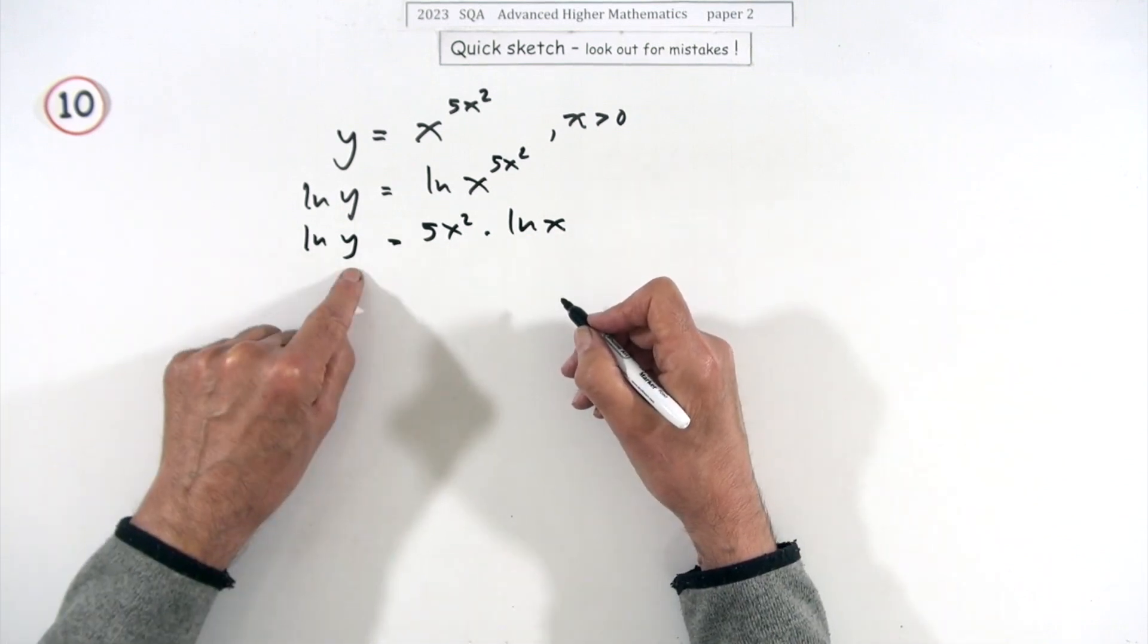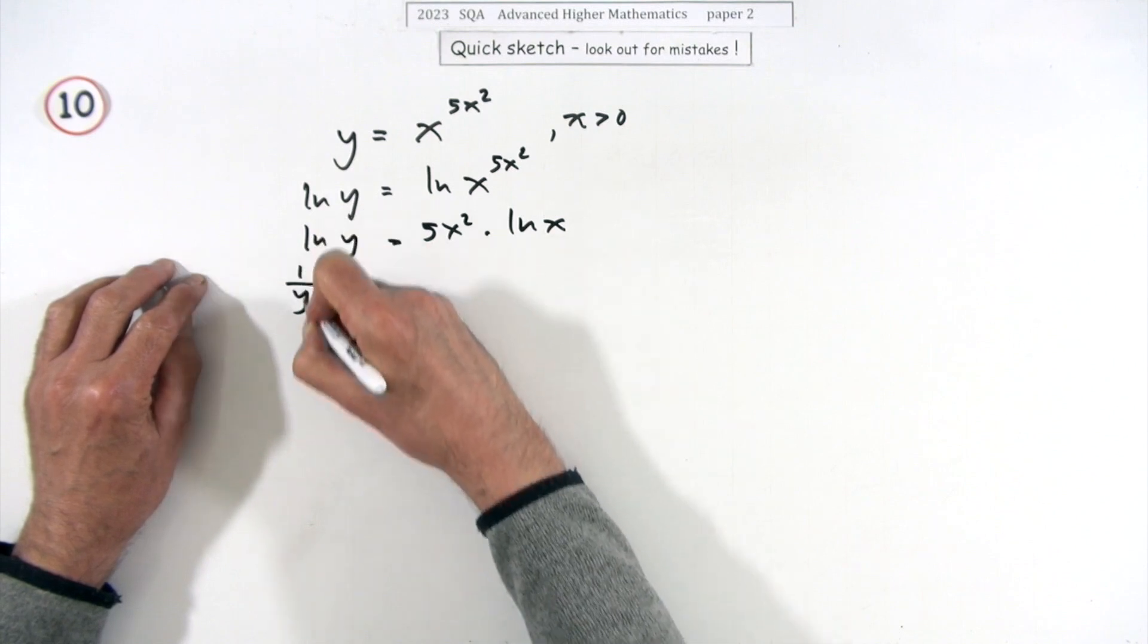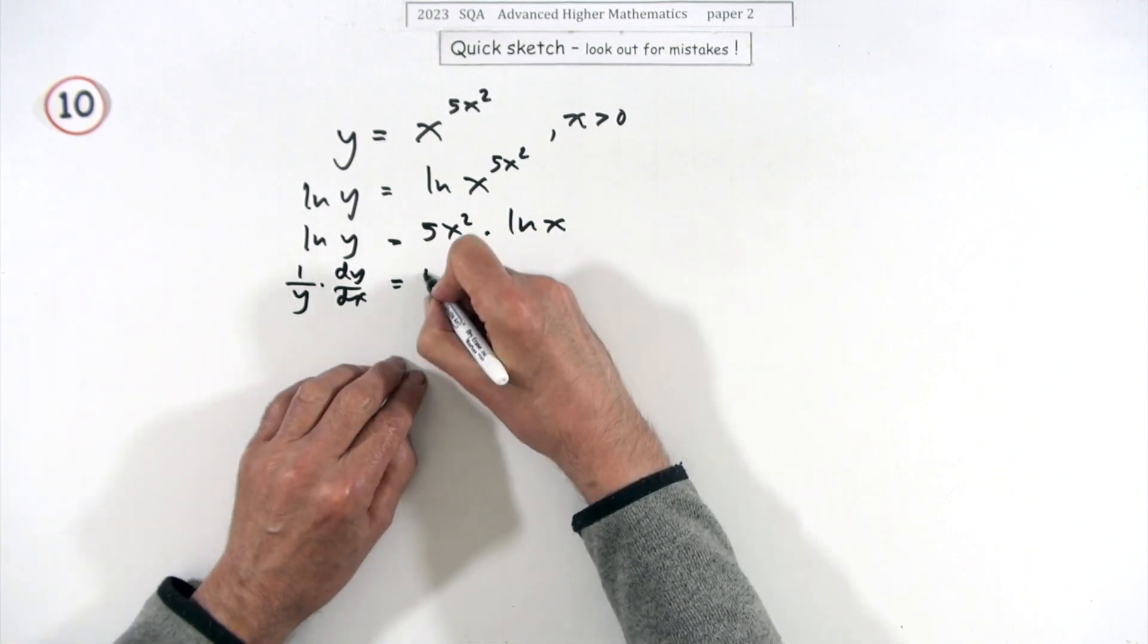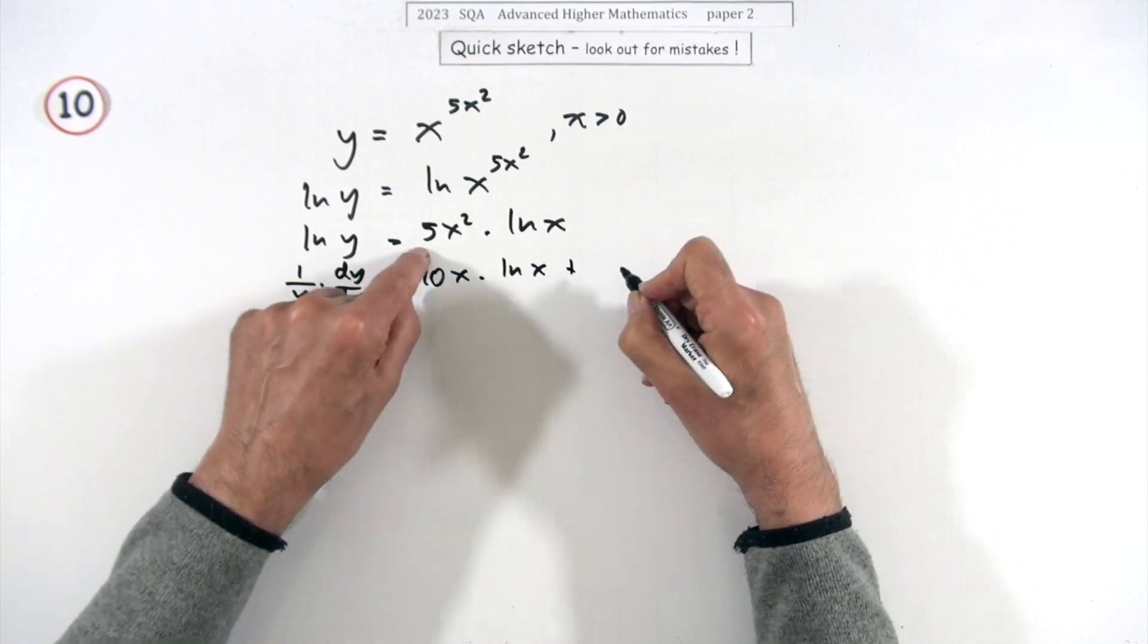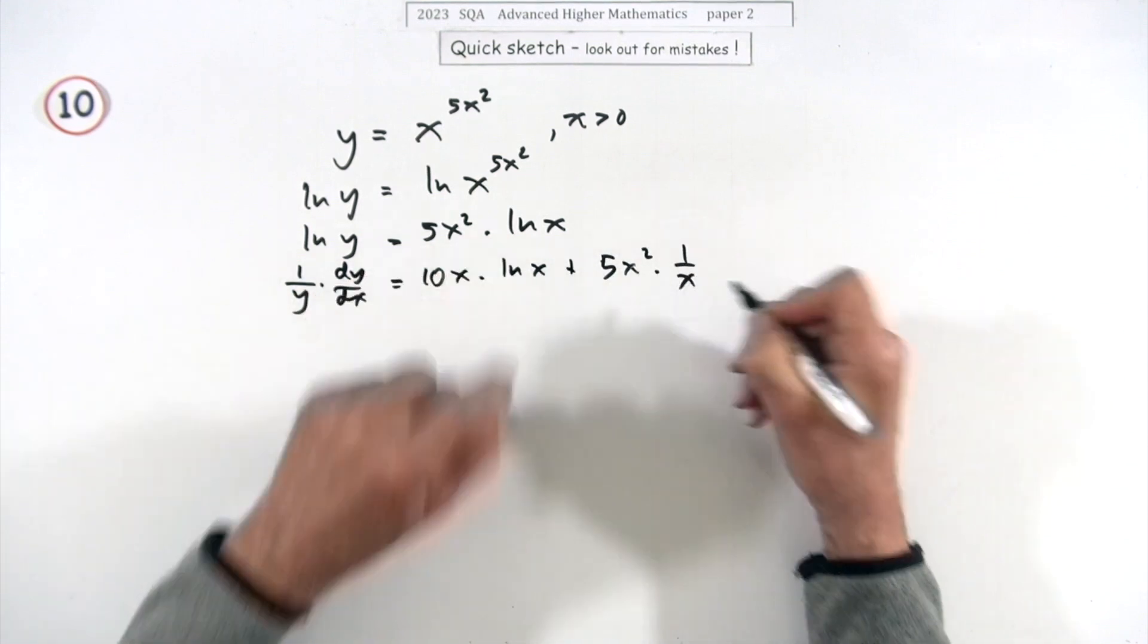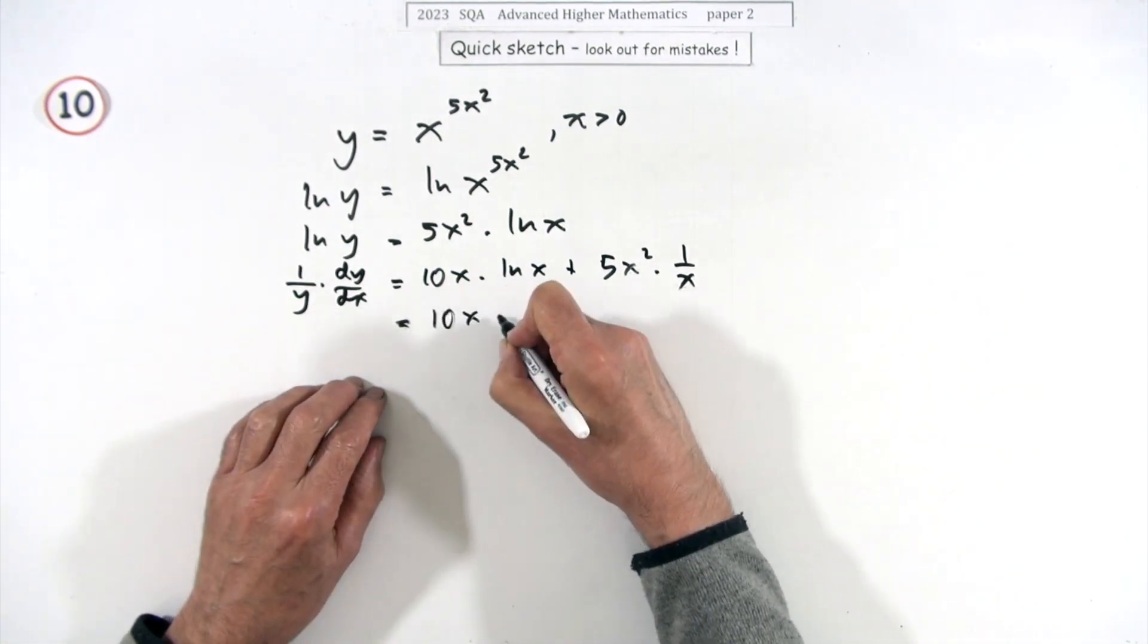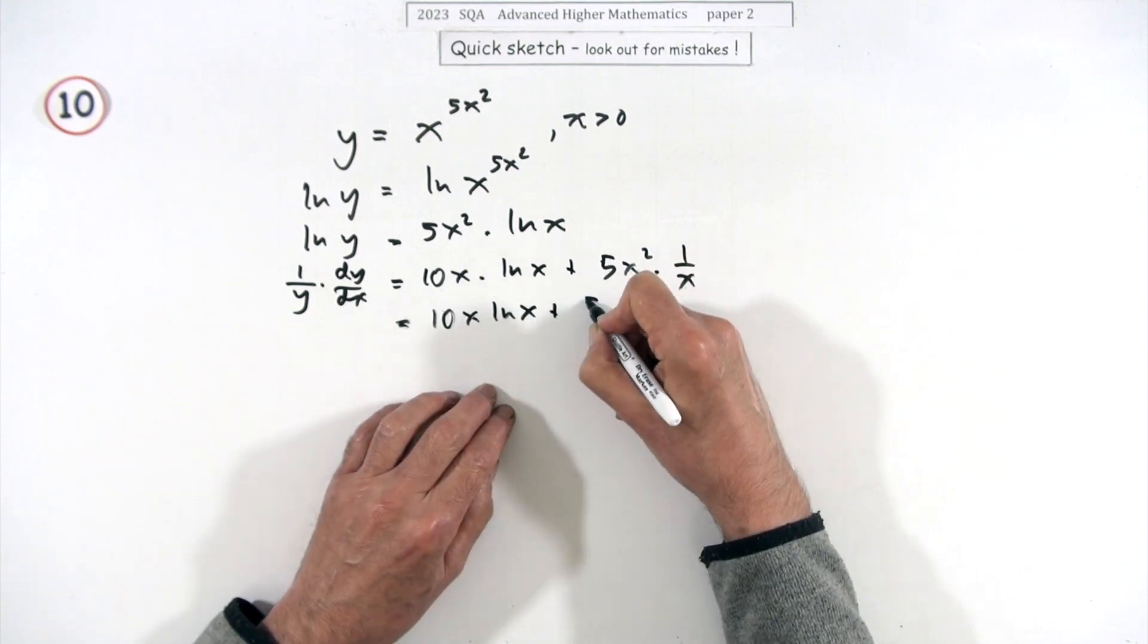Now it's just a case of differentiate it. That's a function of a function - y is a function of x - so the log part would give 1 over y. Then differentiate the y with respect to x. That's a product: 10x, leave that one alone, leave that one alone now and differentiate that and it just goes to 1 over x. Now we'll just tidy that up first of all, so that's 10x ln x plus 5x.